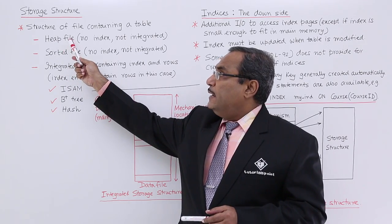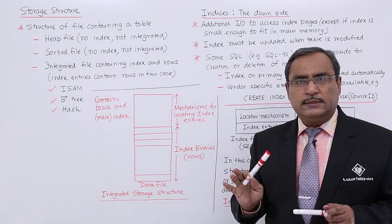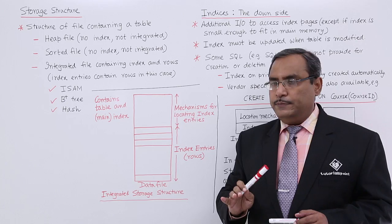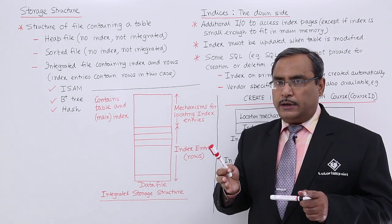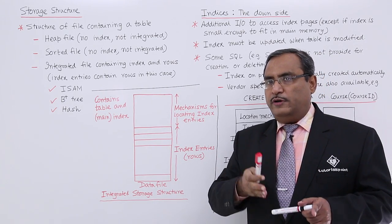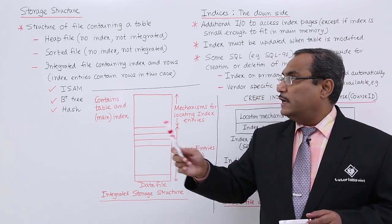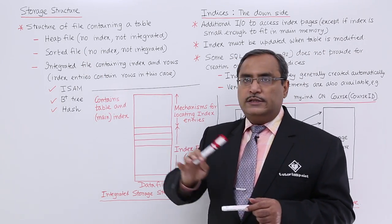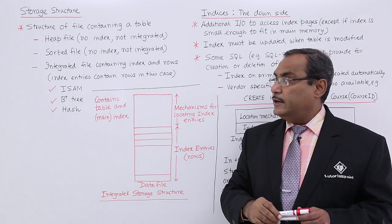It may be of the type heap file where there is no index and it is not integrated. We can be storing our records onto a file where the file is of the type sorted file, where there is no indexing and also not integrated.